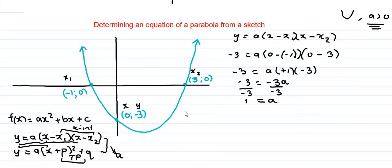Now that we have a, we are going to substitute a, x₁, and x₂ into that equation. We'll have y equals a which is 1, into x, negative times negative, so we have positive 1. And then we have x minus 3.